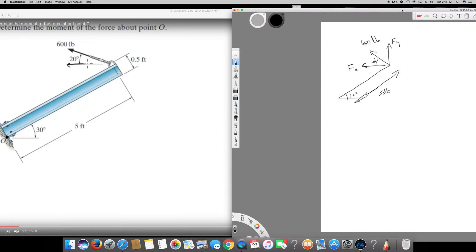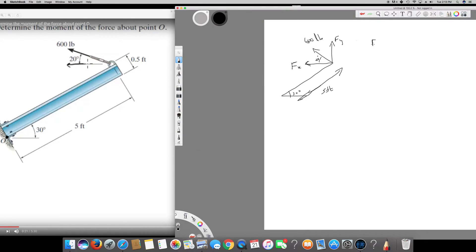So let's find the component. Fx is gonna be equal to 600 cosine 20. And if I find that, if I put it in the calculator, it's gonna be equal to 563.8 pounds.